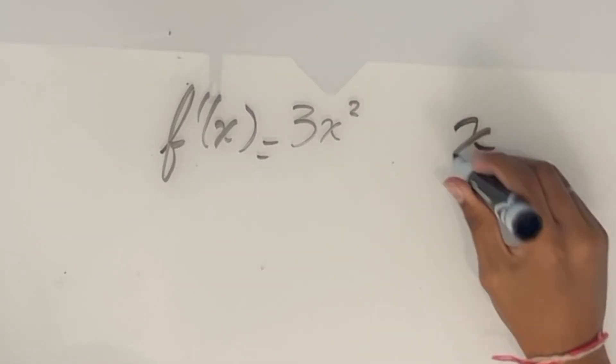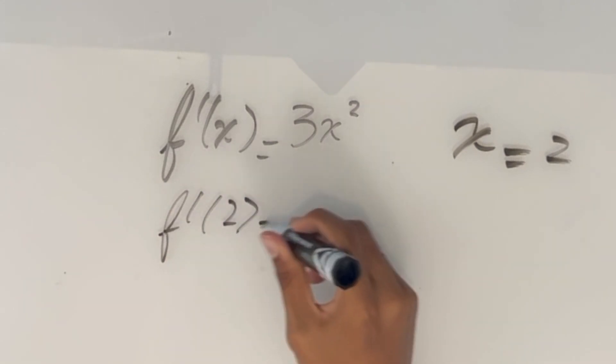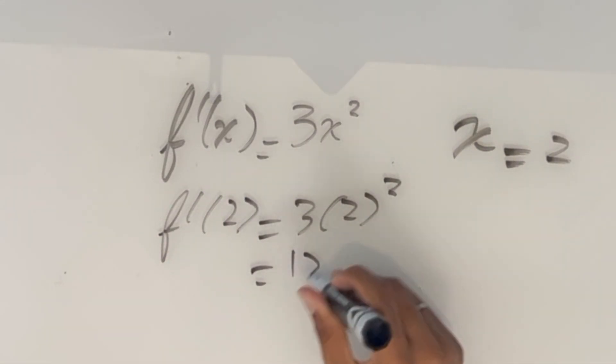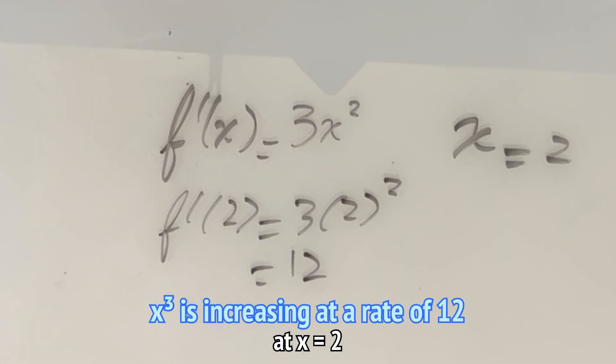And since we're trying to find the slope at x equals 2, all we do is plug in 2 for x. So then f' of 2 is going to equal 3 times 2 squared, which is equal to 12. That means that x cubed is increasing at a rate of 12 at x equals 2.